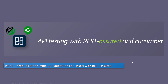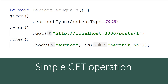Let's get started. A simple GET operation with REST Assured uses the BDD style format — the given, when, and then format. In the 'given' block we specify something like `given().contentType(ContentType.JSON)`. For the 'when' block, we call the `.get()` method to perform the GET operation, where we specify the URL: `http://localhost:3000/posts/1`.